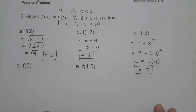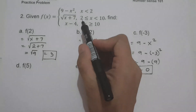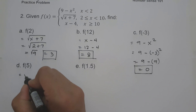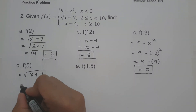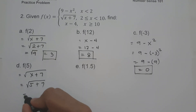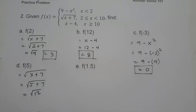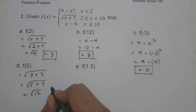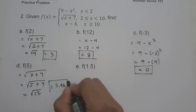On letter d, f of 5. Since 5 is between 2 and 10, we use the square root of x plus 7. So the square root of 5 plus 7 is the square root of 12. If you type the square root of 12 in your calculator, this will be approximately 3.46. This will be your answer.